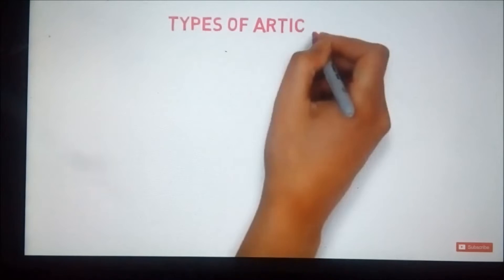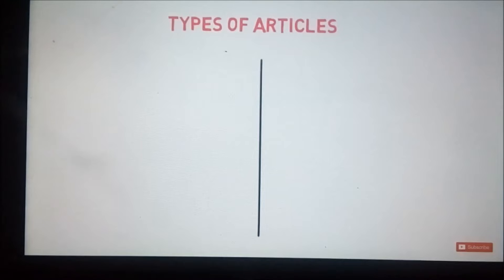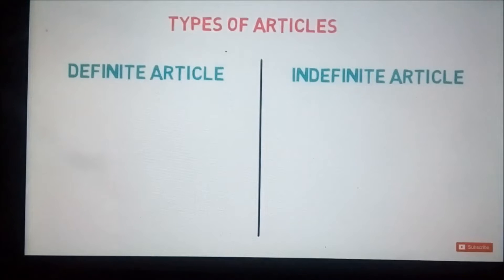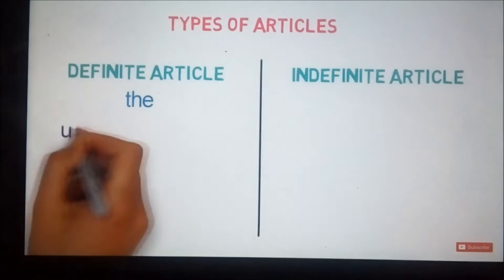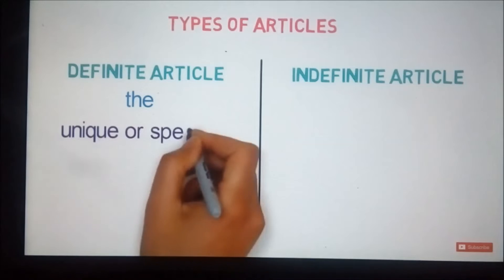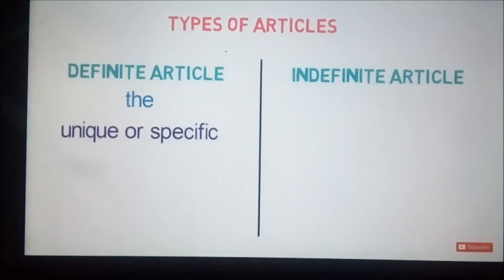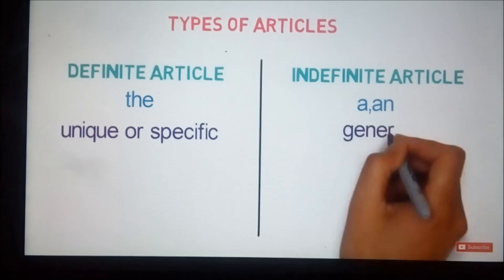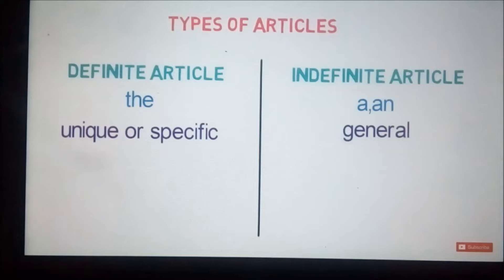Articles are categorized in two different types based on their usage: definite articles and indefinite articles. Article 'the' comes in the list of definite articles, as it shows uniqueness or a specific thing. Articles 'a' and 'an' come in indefinite articles, as they don't show any uniqueness or specific thing. Instead, they show that the thing is being said in general. Now, let's look into an example to understand it better.